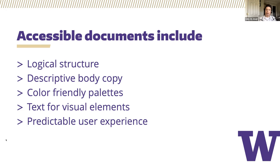Make sure to include color-friendly palettes that have a high contrast ratio between the foreground and the background to make it easily distinguishable for those who may have low vision. And also be sure to include text for visual elements such as images, graphics, figures, and charts. The relationship between headings, paragraphs, figures, and page structure allows the reader multiple ways to navigate the document reliably. Establishing predictable patterns in documents helps the reader gain familiarity with the content as they cycle through the pages.